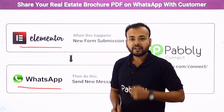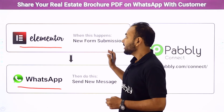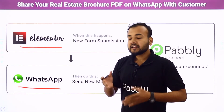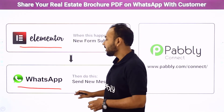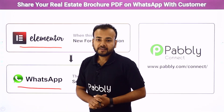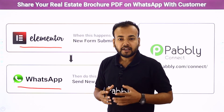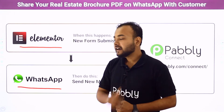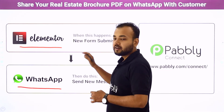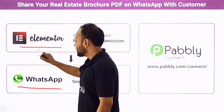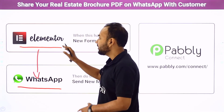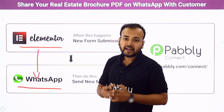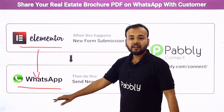To get this done, you have two ways. One is: whenever you receive an inquiry in Elementor Forms, you manually sort out the data of the person and then manually compile a message for each and every inquiry and send it on WhatsApp. But this process is very tiresome and repetitive if you are receiving hundreds of inquiries on a daily basis. What if, as and when you receive an inquiry, a message gets automatically delivered to the person along with the brochure of real estate properties?